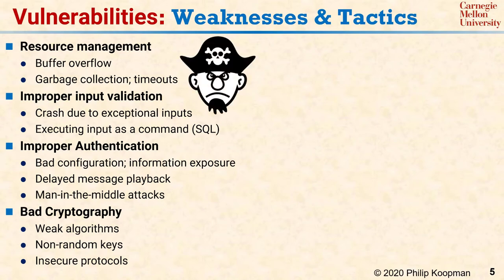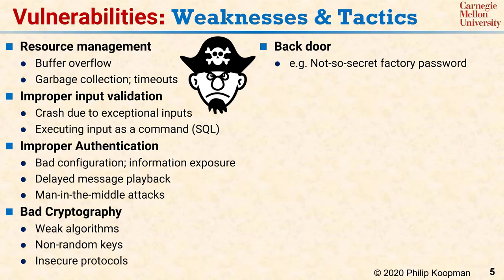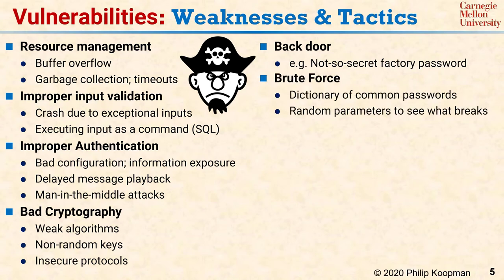Attackers have many different approaches for compromising a system. If your system has a so-called backdoor — such as a factory password that's the same on every system — the attacker doesn't need to break cryptographic protection; they simply find the factory password on the internet and they're in. Even if a password isn't online, attackers can try a brute force search of common passwords and even short randomly selected passwords, starting with something like 1234 or 777 before trying something more sophisticated.